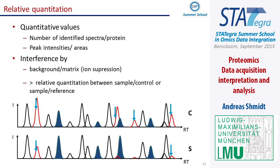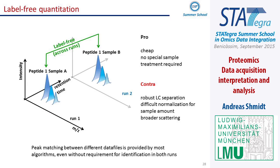We are quantifying between different runs. We typically measure around 20 samples per day, but depending on the sample it could be only two or three. You might have significant batch effects if you measure over a long time. On the other hand, if your sample preparation is very well controlled, this approach is quite cheap and you don't need to introduce any kind of standard — you just use the data you have to normalize.